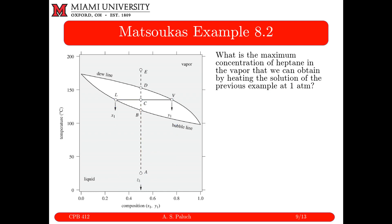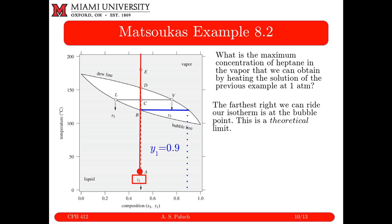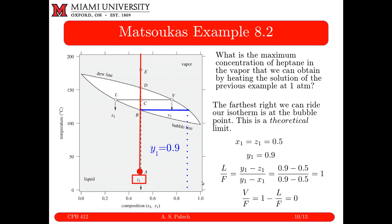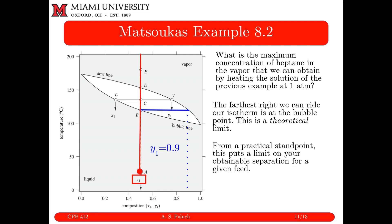Example 8.2: what is the maximum concentration of heptane in the vapor obtained by heating the 50 mol% mixture at 1 atm? Heptane is the most volatile component. The maximum y is found at the bubble point — you draw all possible isotherms between the bubble and dew points, and the farthest right on the dew line is at the bubble point, giving y_max ≈ 0.9. However, at this limit the fraction vaporized is zero, so no vapor actually exits — it's a theoretical limit.